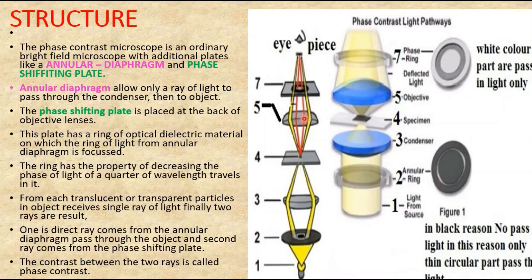When these two beams — the direct ray and the diffracted ray — unite, they are not in phase and the phase differences become apparent. Two sets of rays emanating from the same point of the specimen return to the same point in the image, having phase differences with respect to one another. They interfere to produce variations in intensity of illumination, and therefore contrast in the image formed.